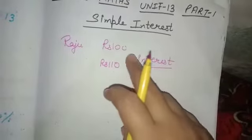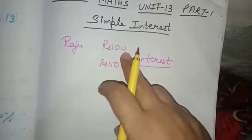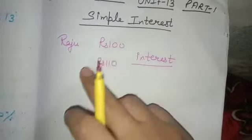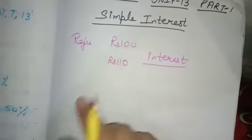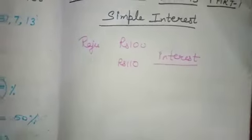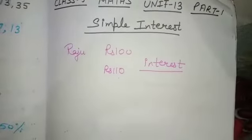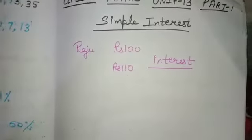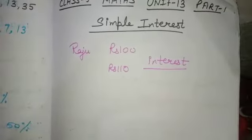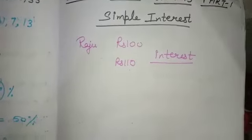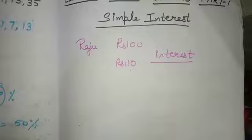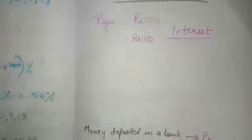What is interest? When someone deposits some money in a bank or gives money to someone else, the extra money charged by that person is called interest.